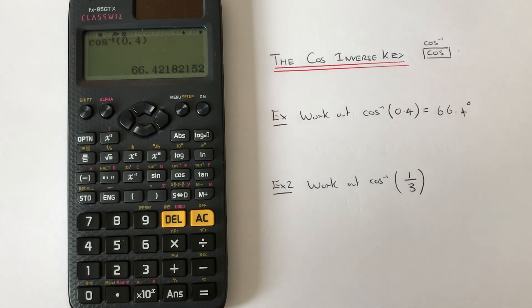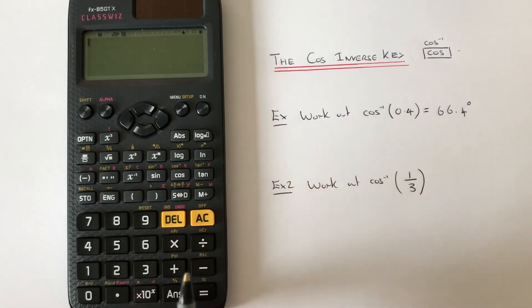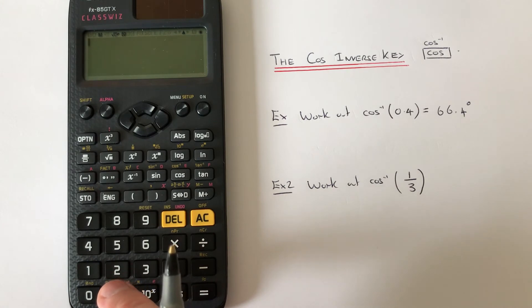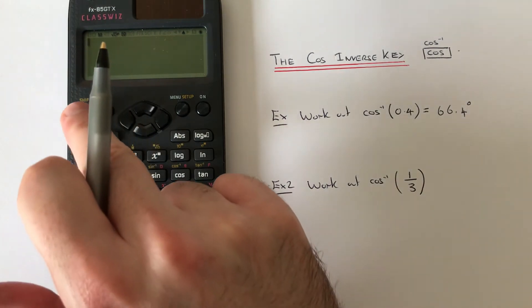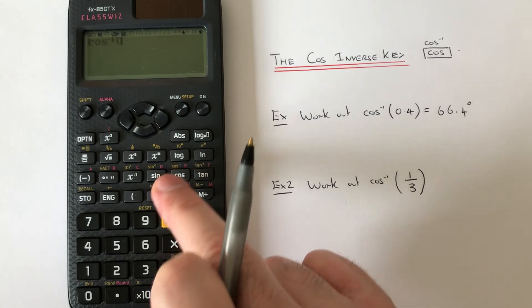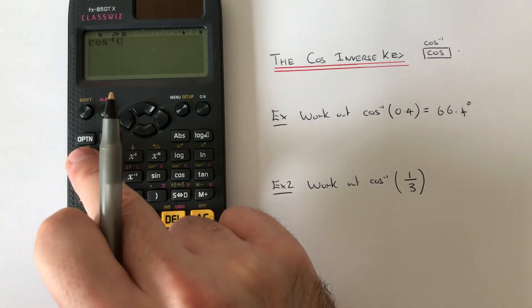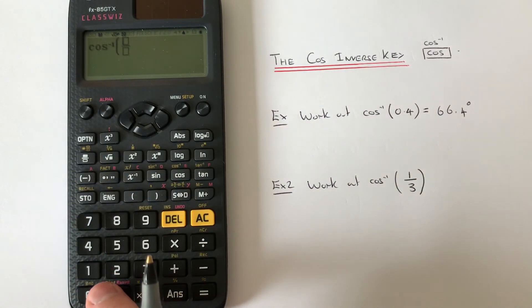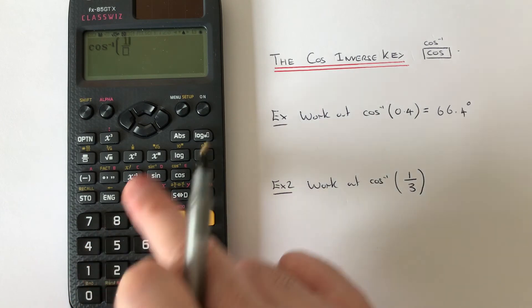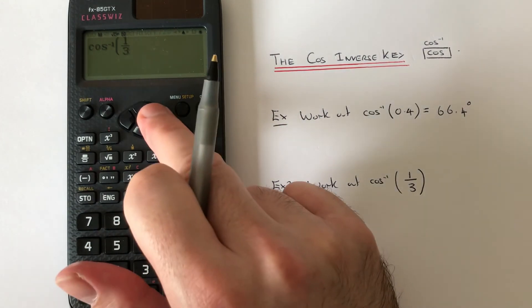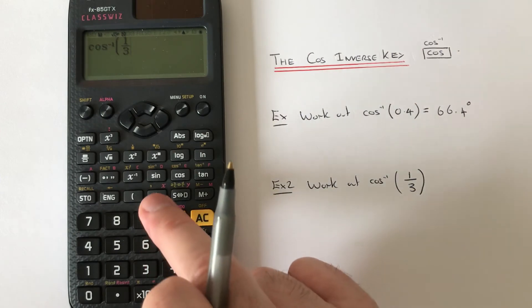We've got cos inverse of one third, so we go shift, cos, press your fraction key, and then it is one over three. Then we need to close the bracket again.